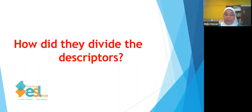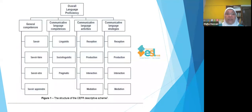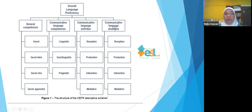Instead of just discussing through the four skills of the language, they divided it into four competences: general competences, communicative language competences, communicative language activities, and strategies. Within the general competences they added four items. The first one is called 'savoir' — a French word meaning knowledge — the knowledge that we pass on to students.